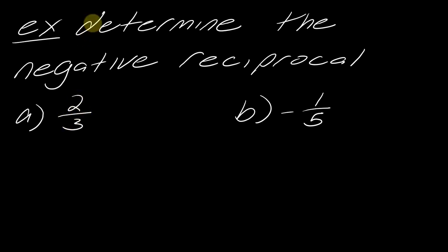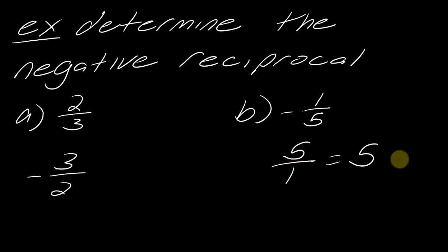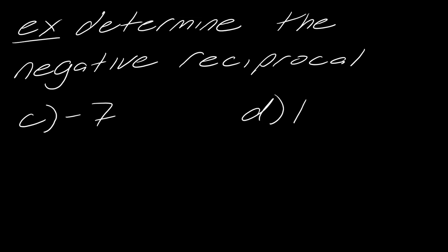In the case of two-thirds, the negative reciprocal is found by flipping the fraction to three-halves and then adding a negative to it. If it already has a negative, take it away; if it doesn't, add one. For negative one-fifth, you'd get positive five over one, which we rewrite as just five. What would the negative reciprocal of negative seven be? That would be positive one-seventh. And for one, the negative reciprocal would be negative one over one, which is just negative one.